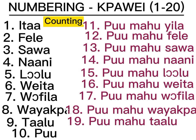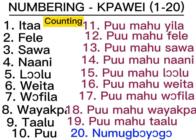Then 20 — we say Numu Boyogo. Sometimes it is elided as Numu Boyogo, but the full word is Numu Boyogo, and it literally means 'a person completed.' Boyogo means finished; Numu means person. So Numu Boyogo means one person finished or completed. Every human being normally has two hands and two feet — all the fingers total 10, and all the toes total 10. Put that together, it is 20. That is how the Mende people got the name for 20.